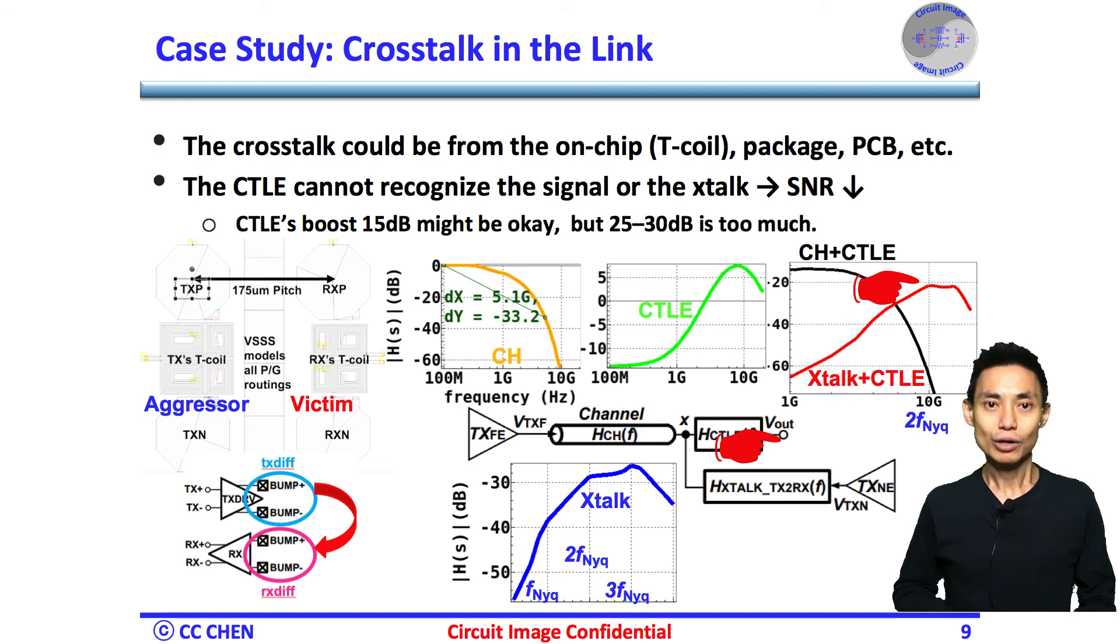So the 30 dB equalization ability might not be achievable. Again, a lot of the CTLE might be able to equalize 30 dB. That's not preferable for noise or crosstalk applications. In addition, the crosstalk must be reduced as small as possible by the careful on-chip packaging and PCB design.